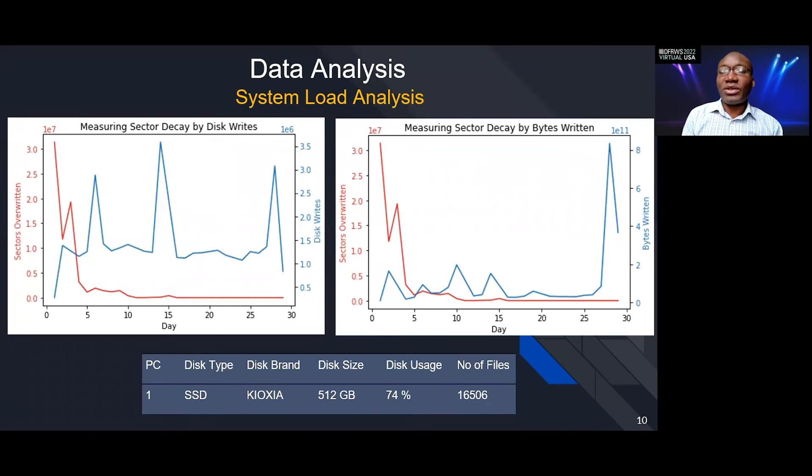We also looked at system load analysis to see how writing to the drive affects the decay of files. In this particular computer that we tested, we see that the red line actually tells us how many sectors have been overwritten, and the blue line tells us how much we are writing to the drive. Between the 5 and the 15, there appear to be some correlation where we have more writes to the drive, we also have more sectors decaying. That is also mirrored by the graphic on the right, where the graphic on the right tells us how many bytes we are writing. If we look at it also between the 5 and the 15, there appear to be a correlation between the number of bytes that are being written to the drive and the number of sectors that are decaying.